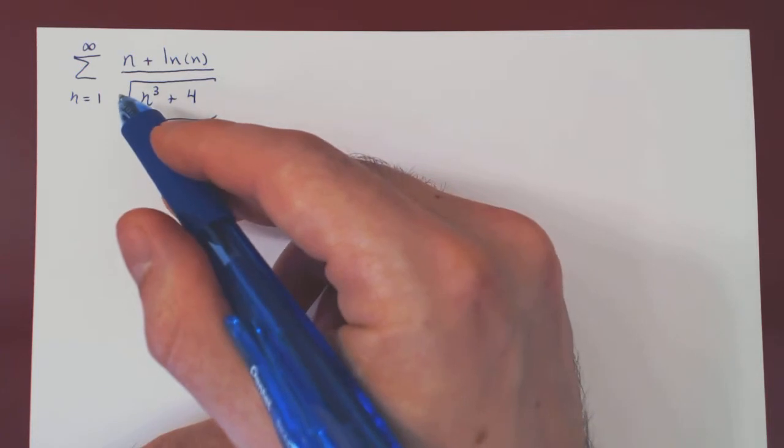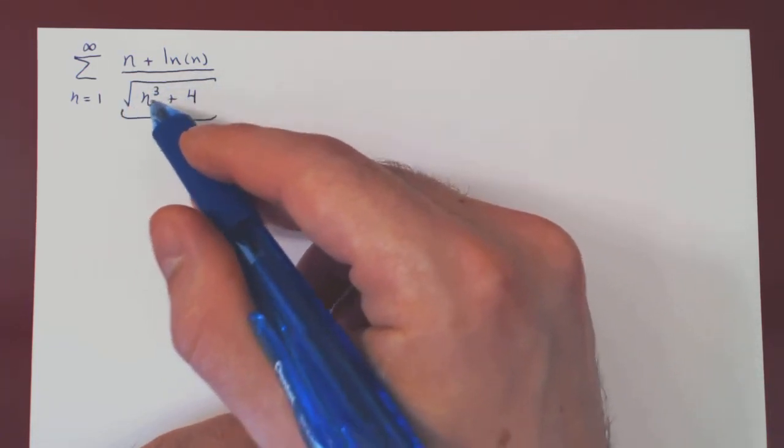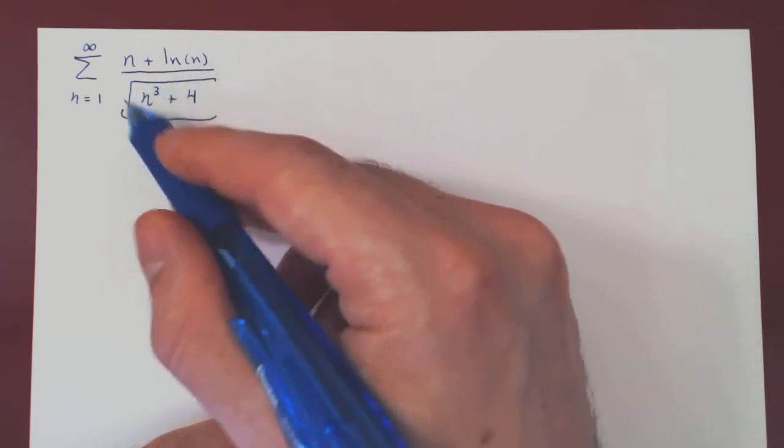Over, well, on the denominator, if you look inside the square root, n cubed is way bigger than the 4. So, 4 is insignificant. So, we are left with essentially the square root of n cubed.